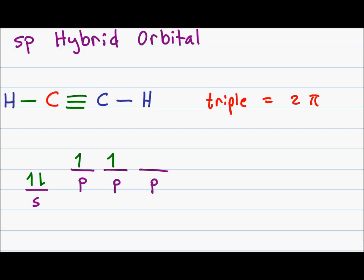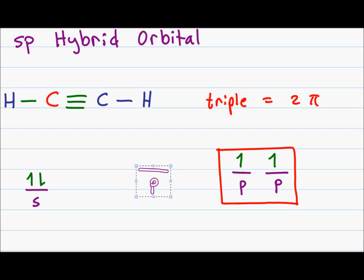A carbon to carbon triple bond is made from 2 pi bonds using 2p electrons. In order to make these triple bonds, we have to set aside both p orbitals that have electrons in them.